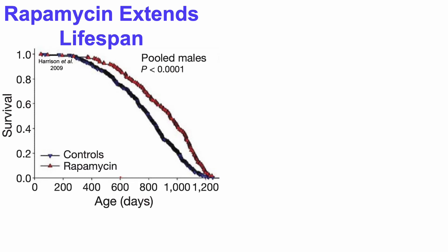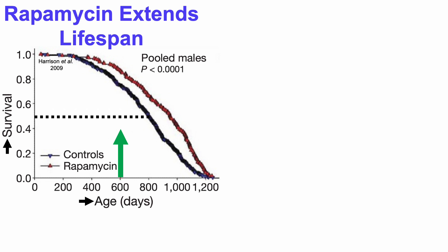Rapamycin extends lifespan, and that's what we can see here. On the y-axis, we've got survival plotted against age in days. In this study, rapamycin was started at midlife, approximately 600 days. When looking at median lifespan — the time when half the colony has died and half is still alive — we can see a significant extension for median lifespan, and this is in male mice. This effect is also true in female mice.